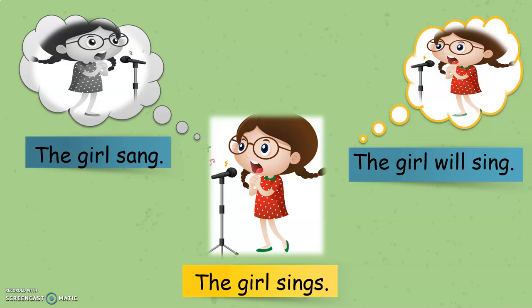But still we find that even the action is the same, the day of the occurrence is different. Here, she sings — sings means she is presently singing. Sang means she has already finished. And will sing means she has not yet begun; she'll begin in the future. So these three action words tell you the different timing, and that is what tenses means.